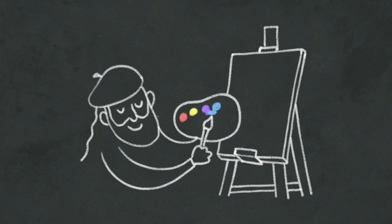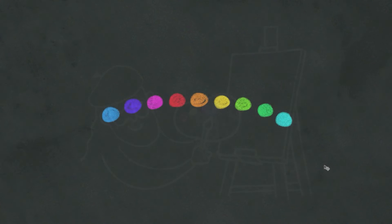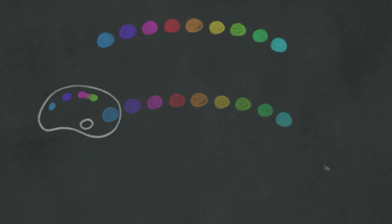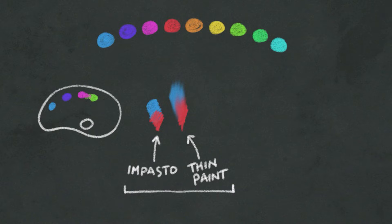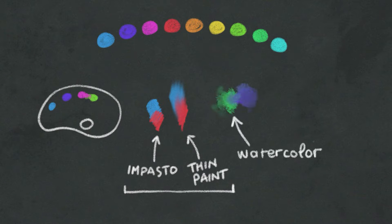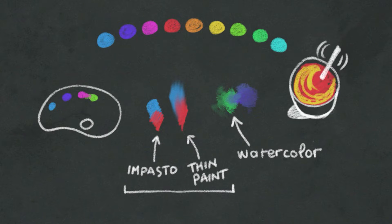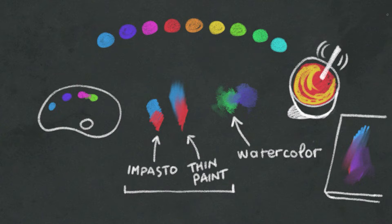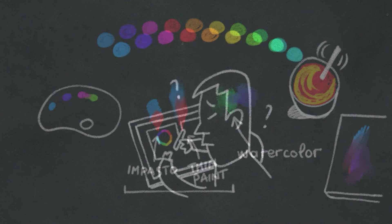Mixing colors is an extremely common task in traditional painting. Colors can be blended together and mixed to create new nuance in different ways — on a palette, with or without the use of paint thinners, with water, to the bucket, directly on the canvas, or on the brush.